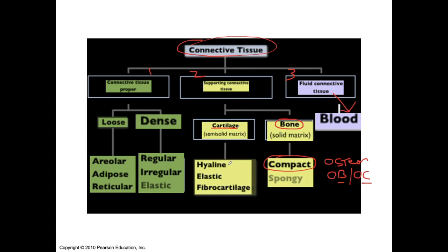For cartilage, we had hyaline cartilage, elastic cartilage, and fibrocartilage. Fibrocartilage was found in the intervertebral discs, the menisci, and even the pubic symphysis. When you study bones this week and look at the pubic bones, between them is the pubic symphysis. Hyaline cartilage has type 2 collagen fibers, while fibrocartilage has type 1. Elastic cartilage gives some flexibility, and we'll go over the parts of the body that have more elastic in just a second.